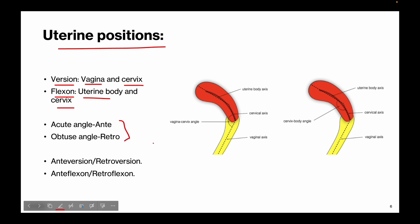The vagina, cervix, and uterine body usually make certain angles with each other. If the angle between them is an acute angle, the term 'ante' is used, while for an obtuse angle, the term 'retro' is used. For example, if the angle between the vagina and cervix is acute, this is termed anteversion; if it is obtuse, retroversion is used. Anteflexion and retroflexion denote the acute and obtuse angle between the cervix and uterine body respectively.